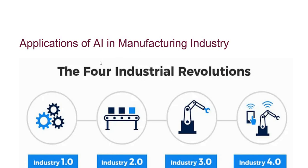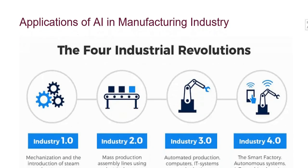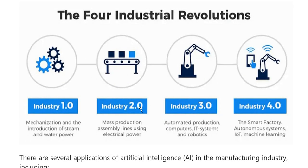Basically, four industrial revolutions hain: Industry 1.0, Industry 2.0, Industry 3.0, and Industry 4.0. Yeh saari chizay four industrial revolutions hain.